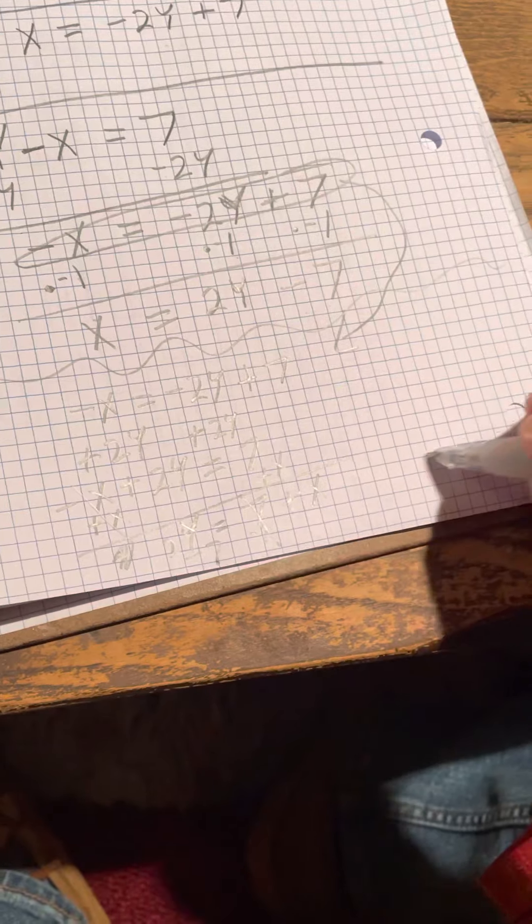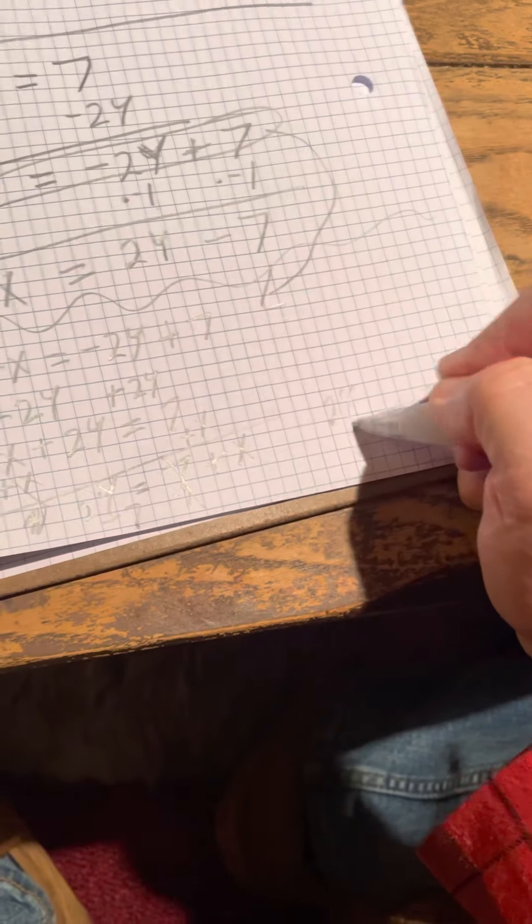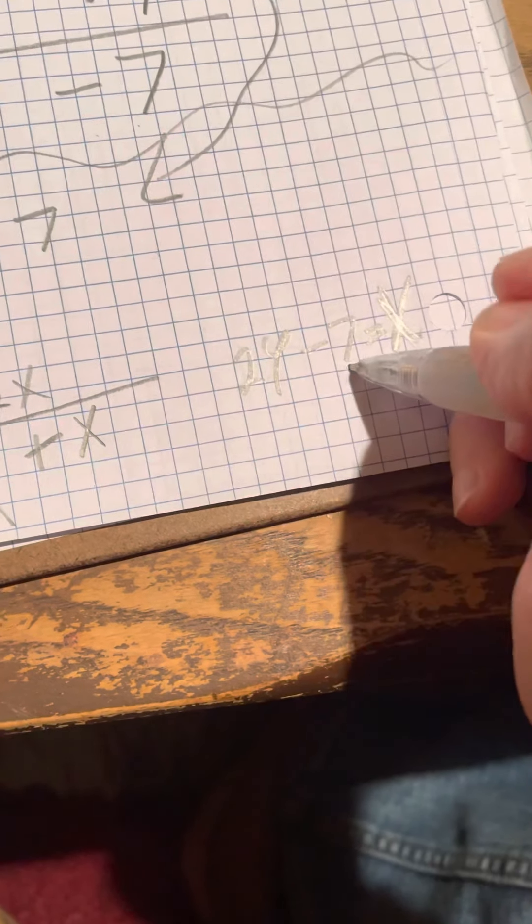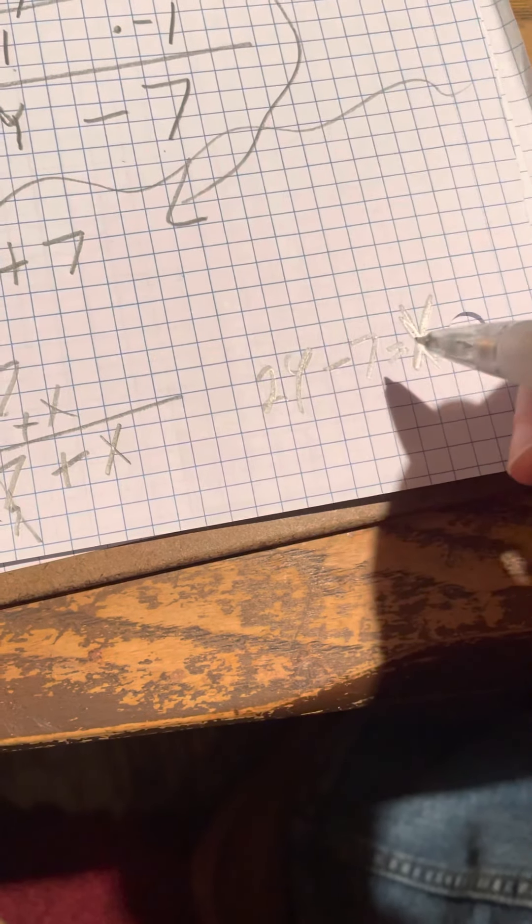And I'll be left with 2y minus 7 equals x. So what does x equal? x equals 2y minus 7.